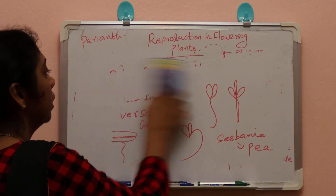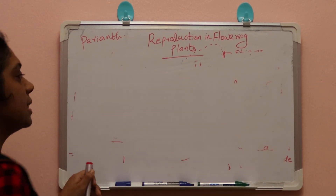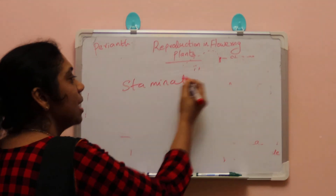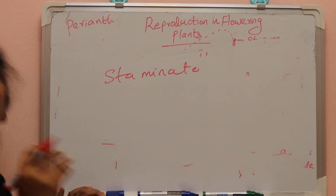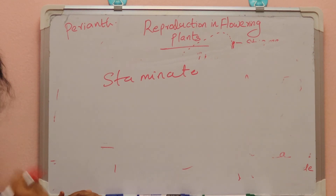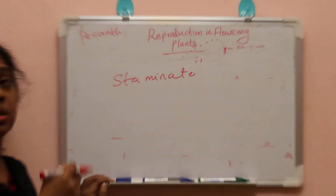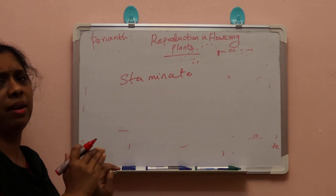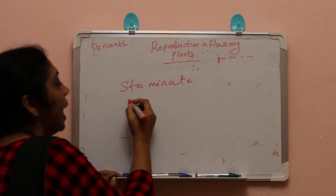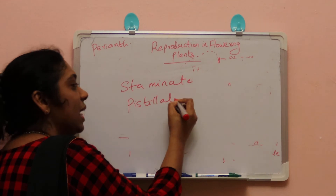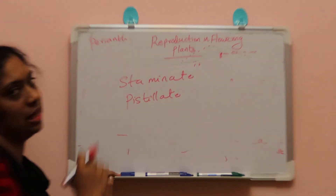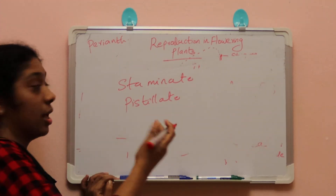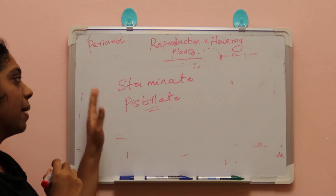Next, two terms: staminate and pistillate flowers. Staminate flowers are flowers which bear only the male reproductive parts, i.e., the androecium. Pistillate flowers are flowers which bear only the female reproductive parts, i.e., the gynoecium.